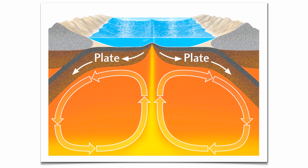Looking at the convection cells just below the crustal plates: if the crustal plates are moving apart, then the convection cells are moving apart; if the crustal plates are coming together, then the convection cells are coming together. That's it for now — thanks so much, see you next time.